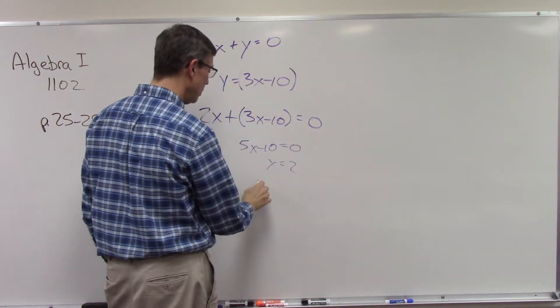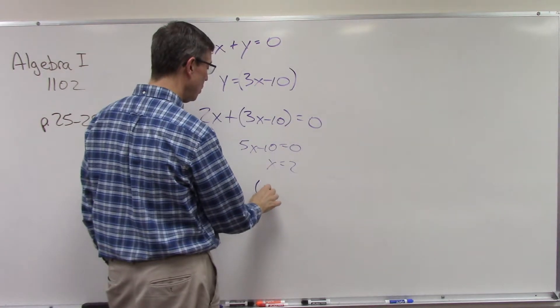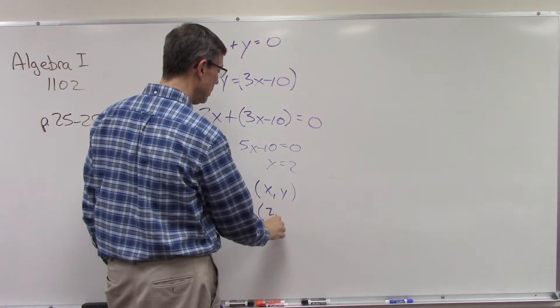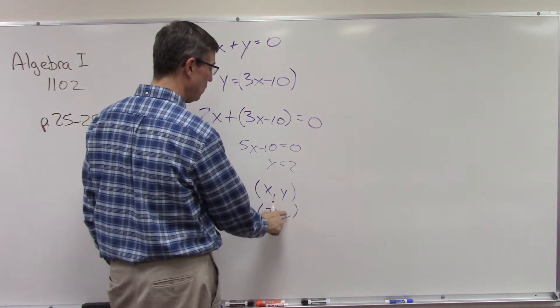Now the final answer is you're going to write an ordered pair. You always put the x value first and then the y value. So we would write two comma and then whatever you figure out that y is.